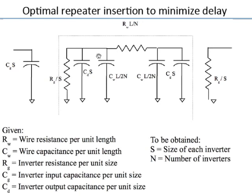The question is how many repeaters to insert and what size to use. We put a model for the inverter and a model for the wire, obtaining an analytical formula for delay as a function of inverter size s and segment length L/n. We then optimize that formula to find the optimal size and number of segments.